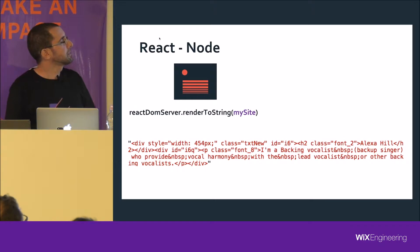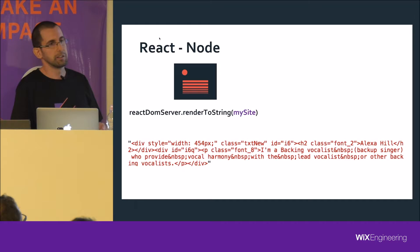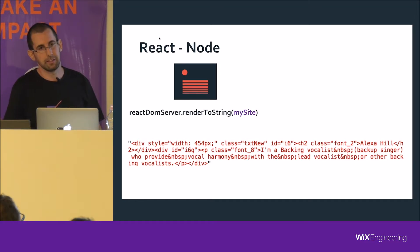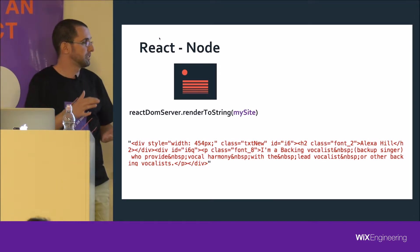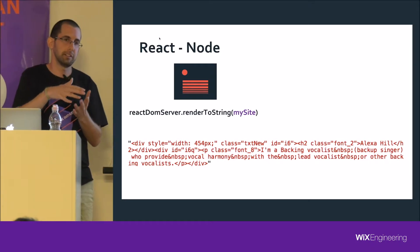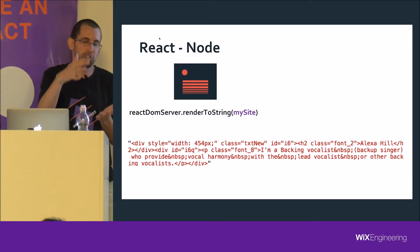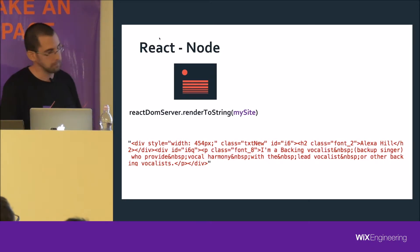In the server, you give the same top-level component to React, but you tell it render to string, and then you take this string representing the content of the site and embed it in a template of the HTML response that you're going to return.